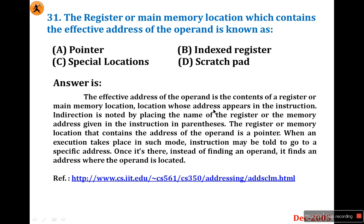The effective address of the operand is the contents of the register or main memory location whose address appears in the instruction. Indirection is noted by placing the name of the register or memory address given in the instruction in parenthesis. The register or main memory location that contains the address of the operand is a pointer.